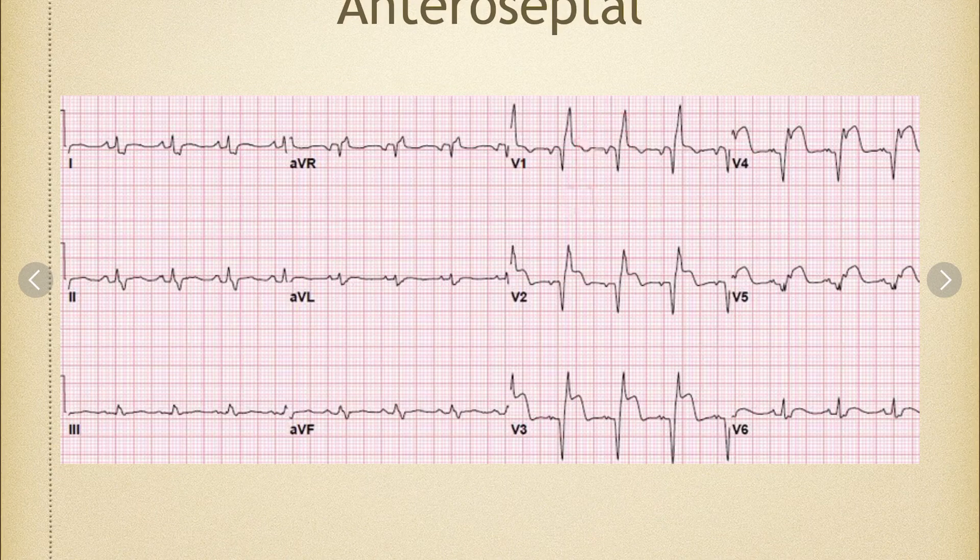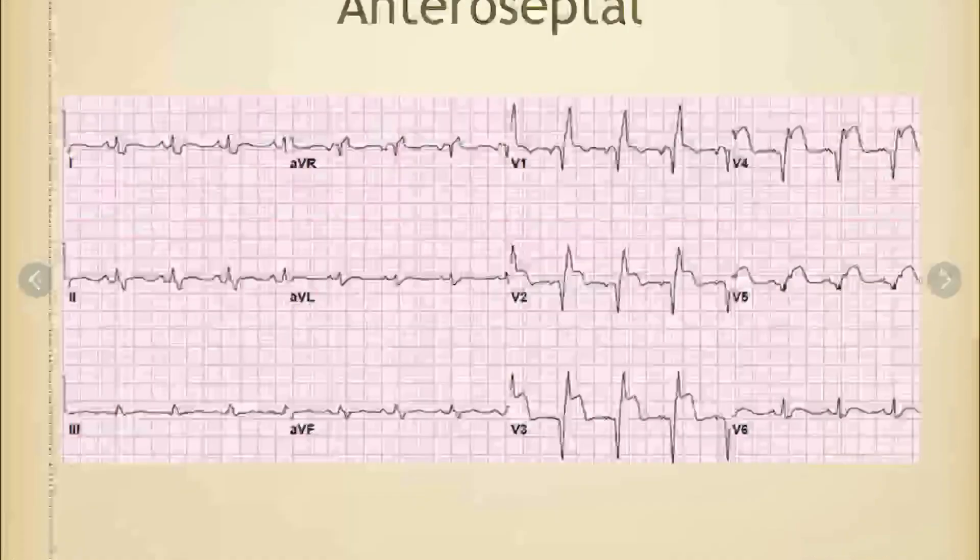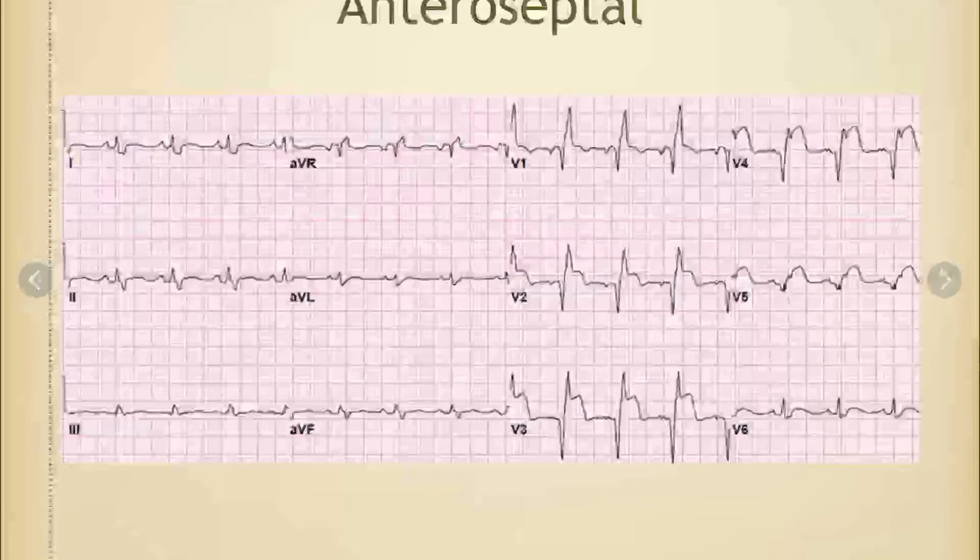So this really is over two areas. Remember this would be septal. And this would be anterior and this would actually be a little bit lateral. So this would be a good anterior MI that is spreading a little bit into the septal region and a little bit into the lateral.